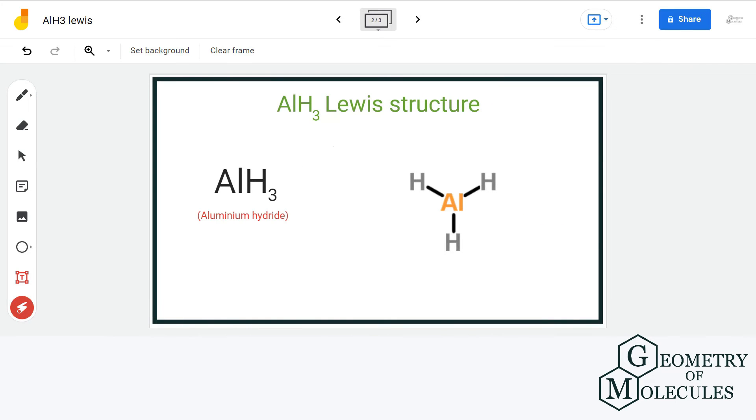For aluminum we have three valence electrons minus zero non-bonding electrons minus six bonding electrons divided by two. That will give us a formal charge of zero.